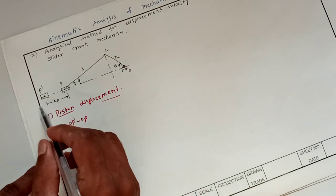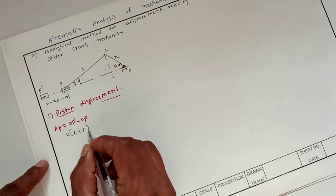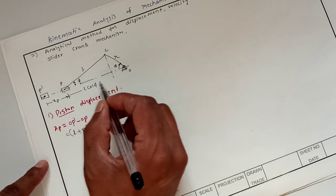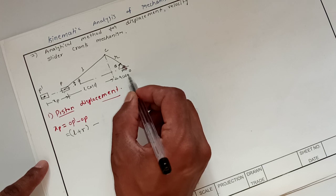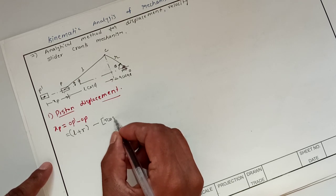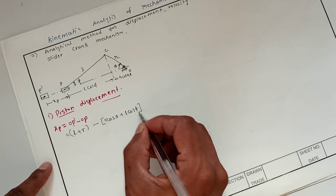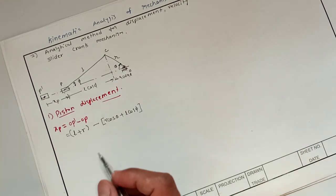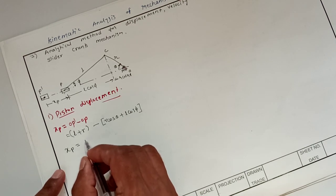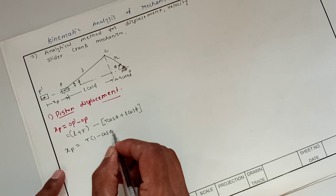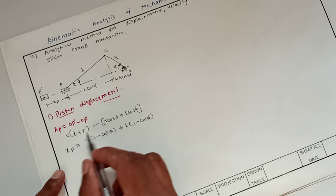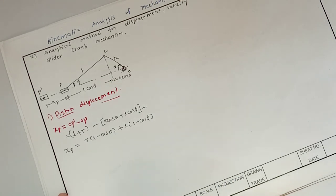So the total distance OP-dash equals L plus R, minus OP. This length is L·cos(phi) and this is R·cos(theta), so OP equals R·cos(theta) + L·cos(phi). Therefore XP equals R(1 − cos θ) + L(1 − cos φ). We get this after expanding the equation.